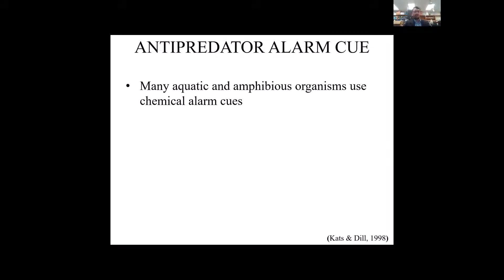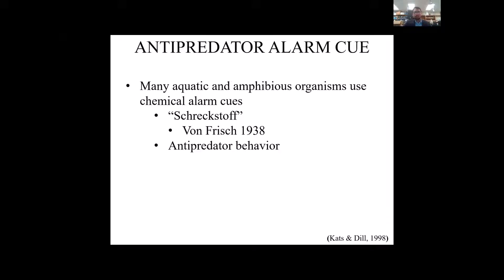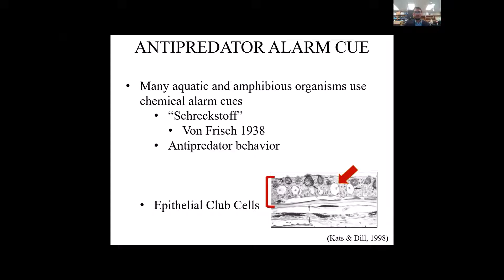There are many aquatic and amphibious organisms that use chemical alarm cues. An example of this is Schreckstoff, also known as 'scary stuff' in German. It was first coined by von Frisch in 1938 and is thought to signify anti-predator behavior in many different species. The alarm cue is presumed to be released by epithelial club cells, so when the epithelium of the fish is damaged, it releases these chemical cues into the water and other fish respond to those cues with anti-predator behavior.